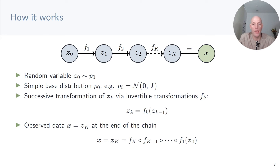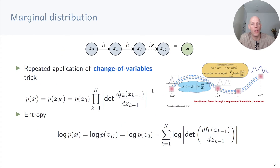If we find good parameters of these invertible transformations fk, then we have a prescription of how to generate data from a simple base distribution. We can compute the data distribution by repeated application of the change of variables trick, so that px is the base distribution times the product of 1 over the absolute value of the Jacobian determinants. Similarly, we can compute the entropy, which just sums up the log determinants of the Jacobians plus the log of the base distribution.